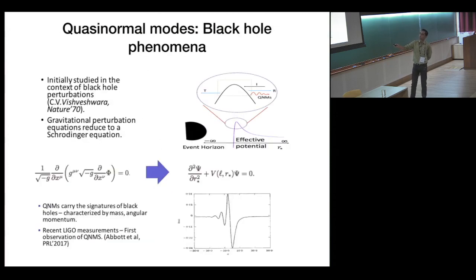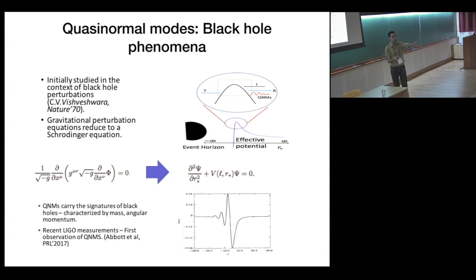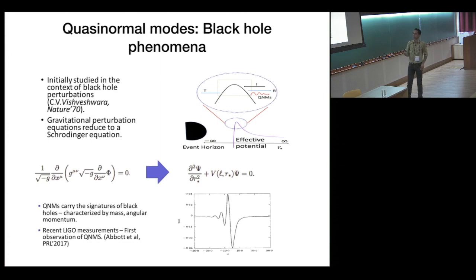This is also closely related to quasi-normal modes studied in the context of black holes. It was C.V. Vishweshwara who discovered these by studying perturbations of a black hole. If you write down a wave equation in curved space-time and reduce it with certain assumptions, it reduces to a Schrödinger equation with an effective potential — just a scattering problem. He found these quasi-normal modes, and crucially, these carry the essential features of the black hole: mass, angular momentum, and charge. These were the things kind of seen in recent LIGO measurements, which many people in this institute are associated with.